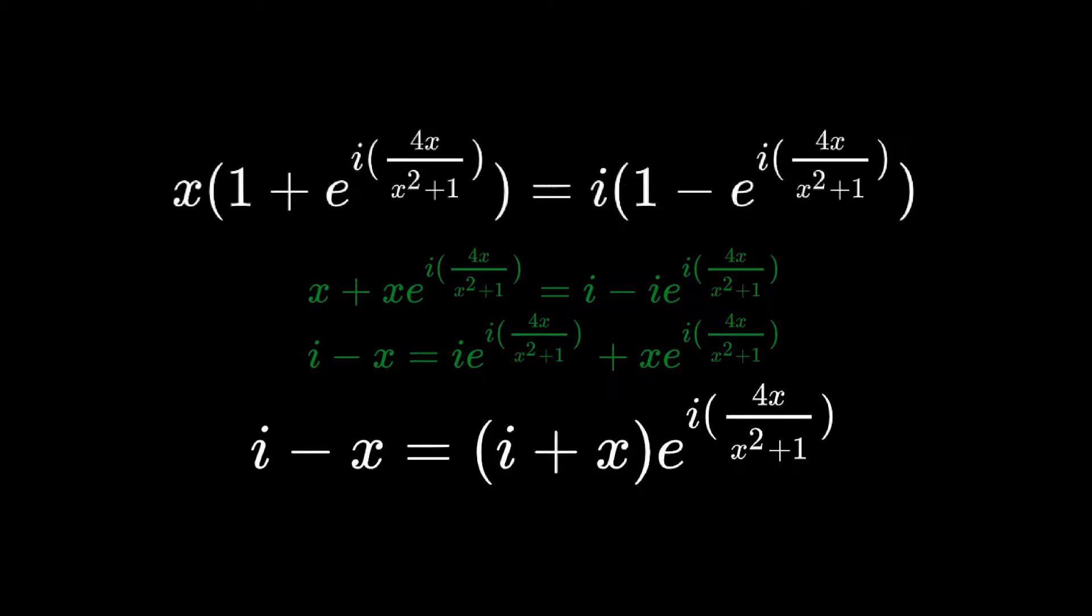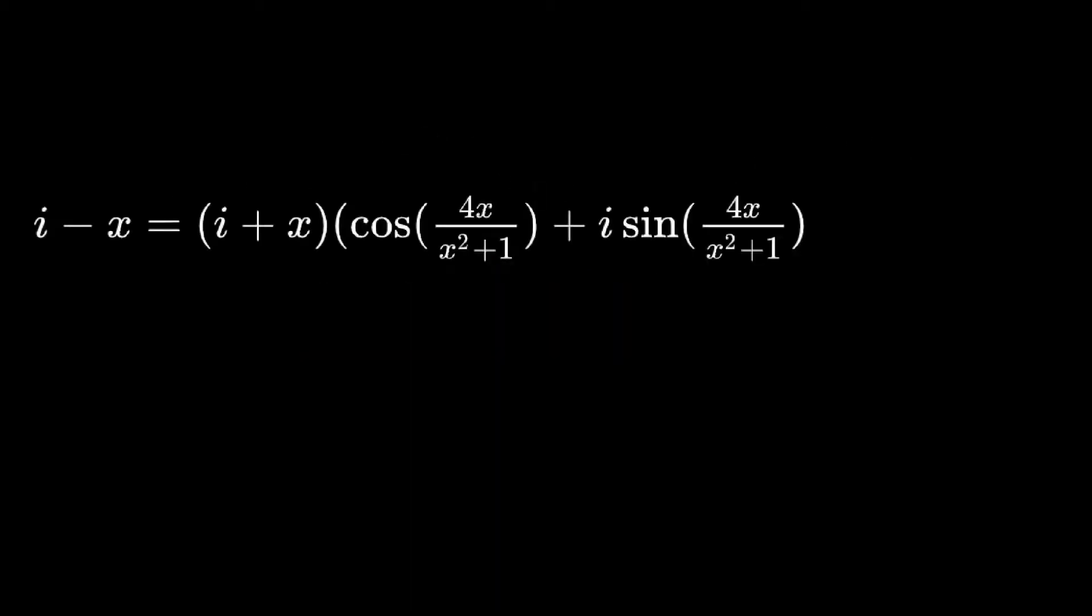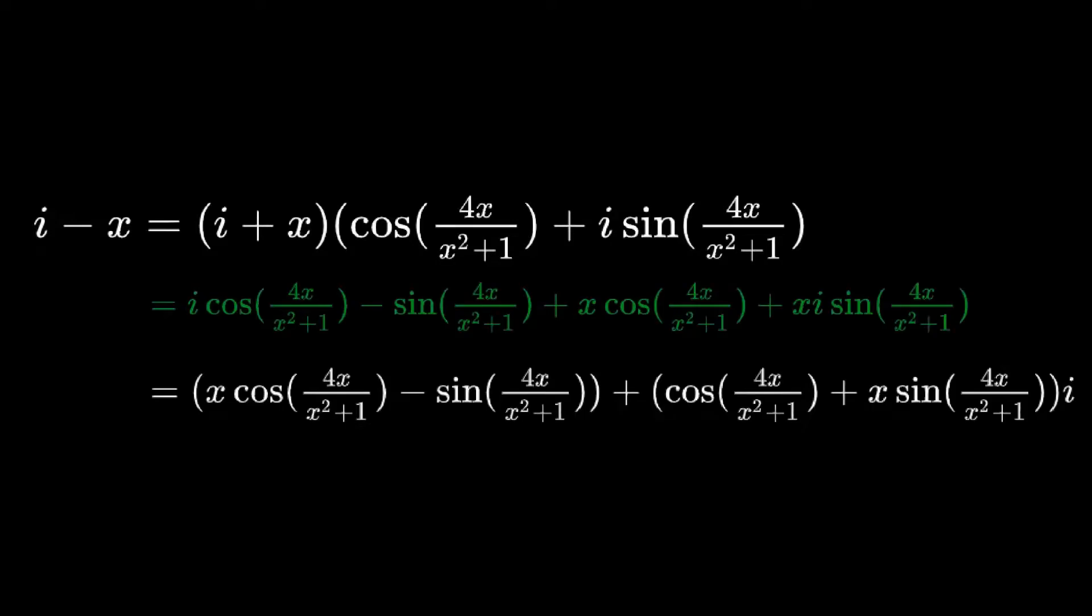We can rewrite e to the i times 4x over x squared plus 1 as cosine of 4x over x squared plus 1 plus i sine 4x over x squared plus 1, and we can do more algebra to separate the real and imaginary parts.